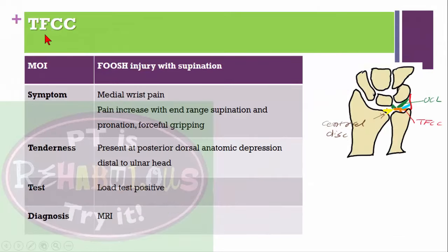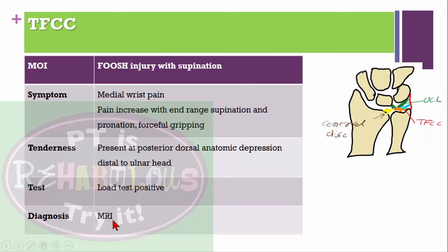Triangular fibrocartilage complex (TFCC) problem: mechanism of injury is fall on outstretched hand with supination. Symptoms include medial wrist pain, especially increased with end range supination and pronation, and forceful gripping activities. Tenderness is present at the posterior or dorsal anatomical depression into the distal ulnar head. The load test is positive. Diagnosed with MRI.